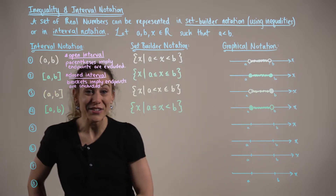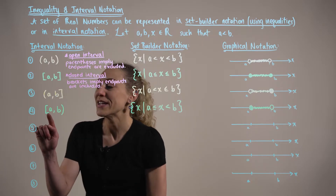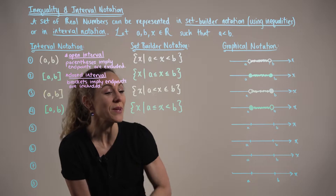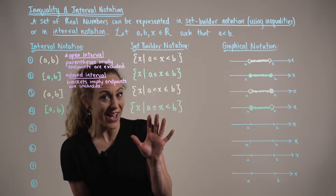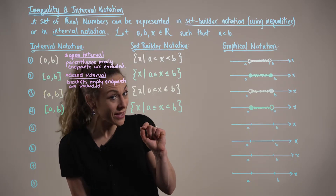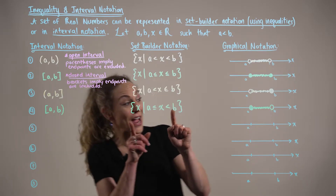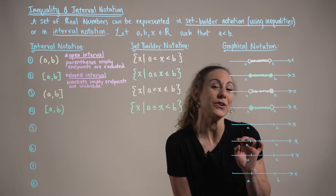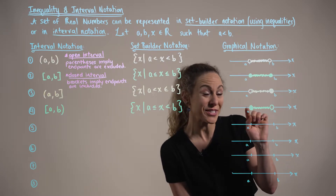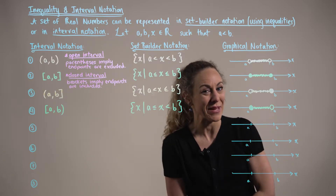Our next interval — notice how we have switched the interval notation. In set builder notation we have the set of all real numbers x such that x is greater than or equal to a but strictly less than b. In the corresponding graphical notation, observe how we have a closed dot at point a and an open dot at endpoint b.